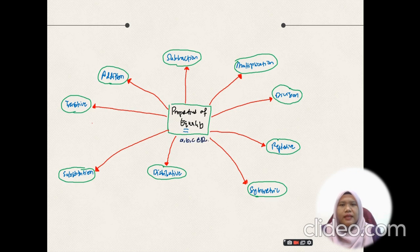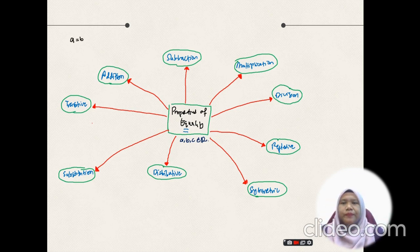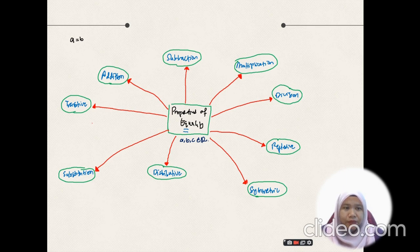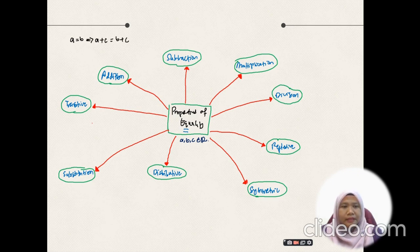Let's say a, b, and c are real numbers. For the addition property of equality, please take note that it comes in the form: if a is equal to b, then a plus c is equal to b plus c.